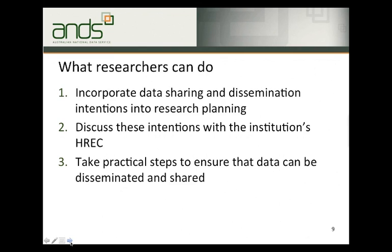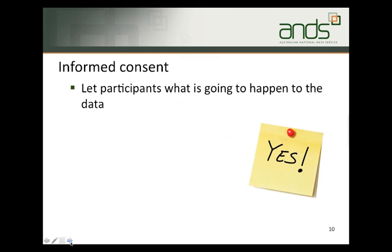There are things that researchers can specifically do. They can incorporate data sharing and dissemination intentions into their research planning and discuss these intentions with the institution's Human Research Ethics Committee. Then there are three practical steps they can take to ensure that data can be disseminated and shared. Step one involves getting informed consent. Informed consent is an important element in the conduct of this kind of research. Researchers are expected to obtain informed consent for people to participate in research and for use of the information collected.